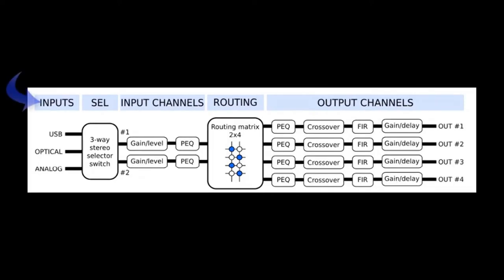We see here the USB and optical digital inputs as well as the analog inputs which are selected and then immediately go into precision digital gain level controllers. The two parametric equalizers on the input and routing section precede the routing matrix.